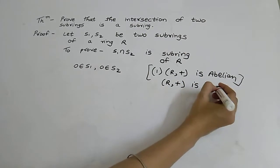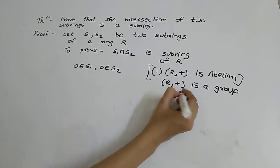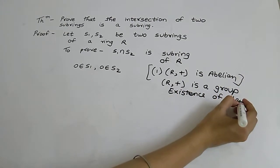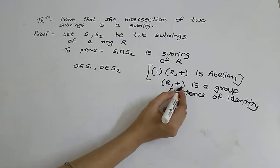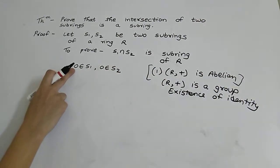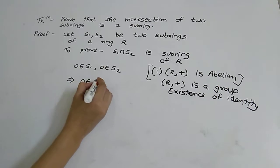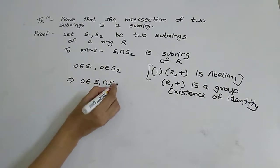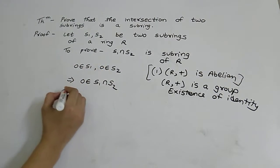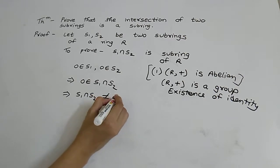The third property of a group is existence of identity. Under binary operation addition, the identity is zero. So zero belongs to S1 as well as S2, which implies zero belongs to S1 intersection S2. This means S1 intersection S2 is non-empty.